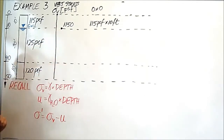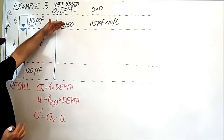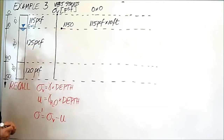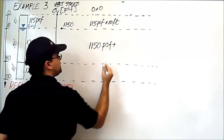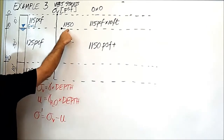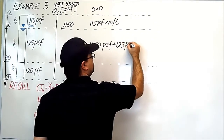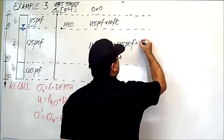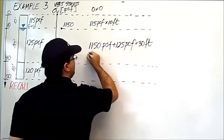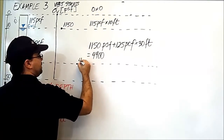Let's move on to the next interface. We start by adding the stress above — 1,150 pounds per square feet — plus, using the formula, the density of this soil layer is 125 pounds per cubic feet. The depth is 30 feet, which is the difference between 40 feet and 10 feet. This value comes out to be 4,900 pounds per square feet.